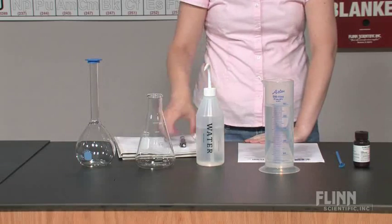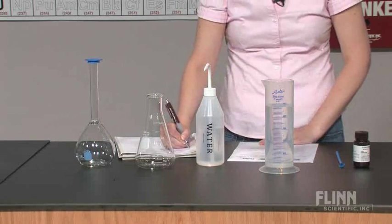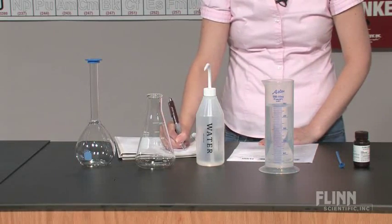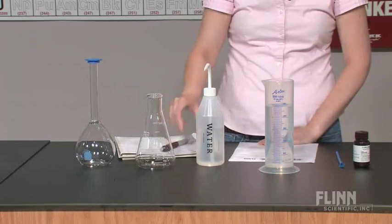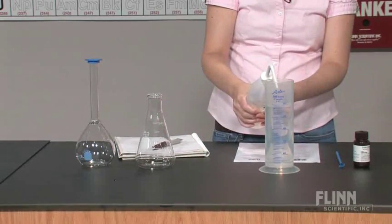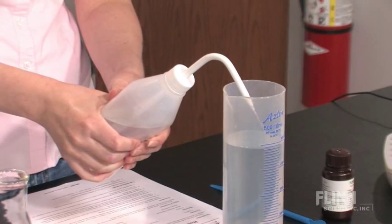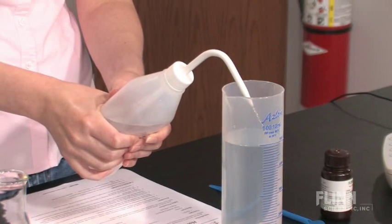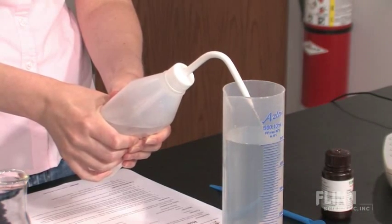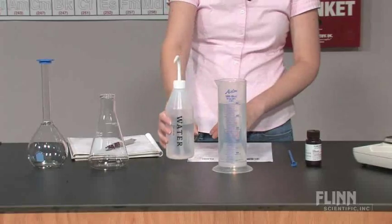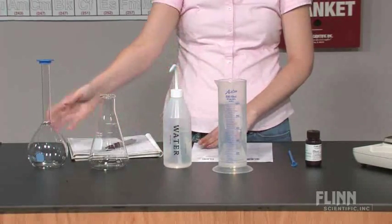The first step in preparing a catalase solution is to determine the total volume of catalase solution required for the experiment. This volume is equal to the amount of distilled or deionized water required to prepare the catalase solution. For this example, let's set the desired volume at 500 milliliters. Depending on the accuracy needed, different types of glassware may be used.